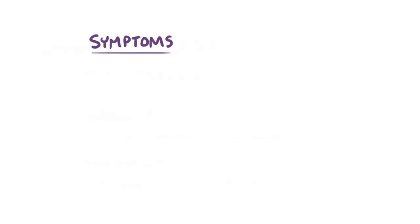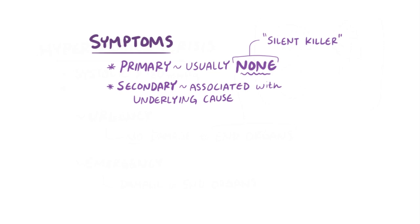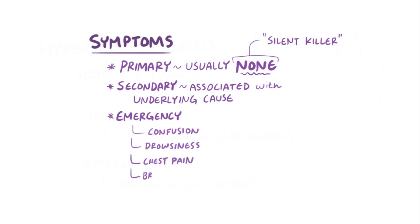For symptoms, usually primary hypertension isn't actually accompanied by any symptoms, which is why it's sometimes referred to as a silent killer. Secondary hypertension might involve a variety of symptoms associated with the underlying cause. And finally, hypertensive emergency might involve symptoms like confusion, drowsiness, chest pain, and breathlessness.